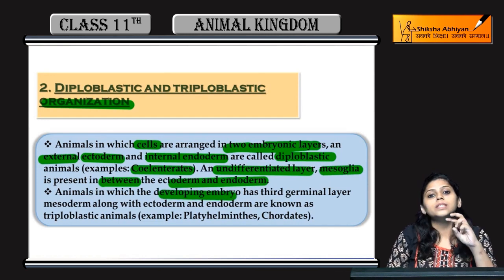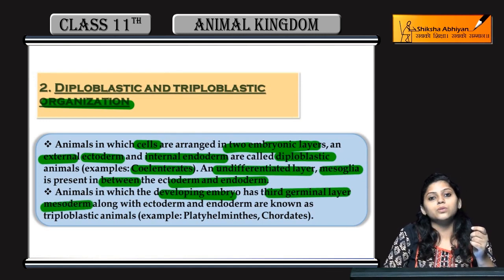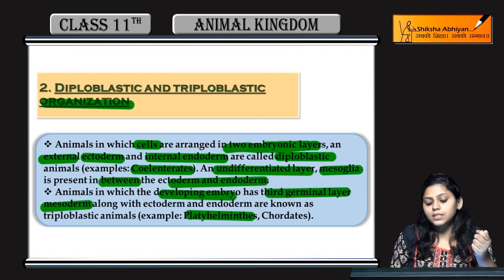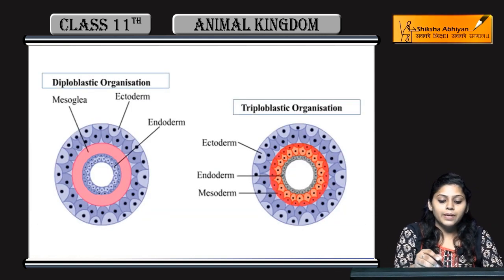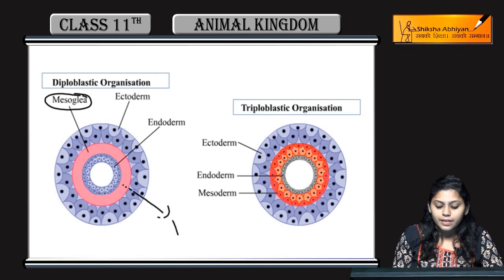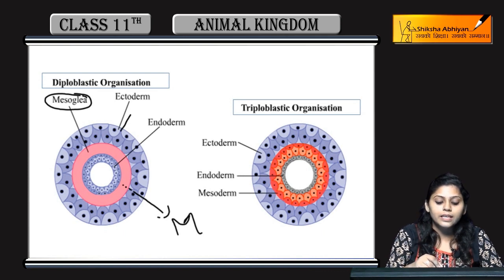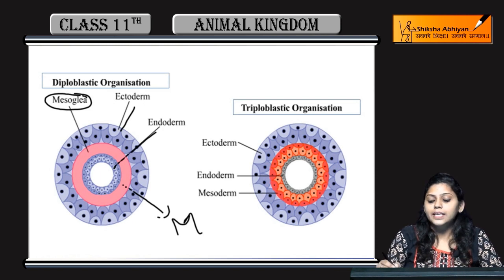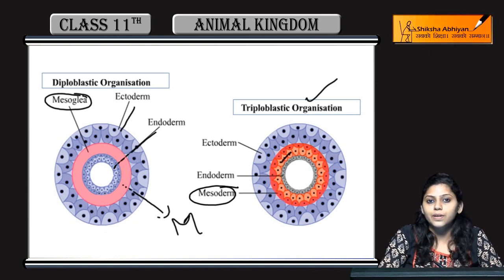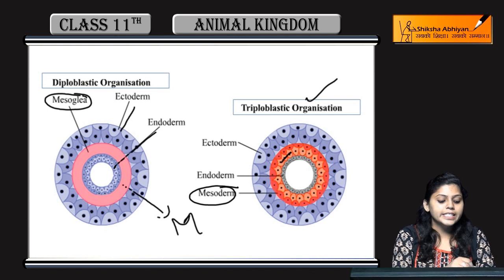Animals jinme developing embryo mein three germinal layers hoti hain — ectoderm aur endoderm to hoti hi hai, saath mein mesoderm bhi present hoti hai — unhe triploblastic organization ya organisms bolte hain. Inme platyhelminths aur chordates aate hain. Diploblastic organism mein mesoglea layer hai — yeh jo pink color ki layer hai yeh mesoglea hai, isme differentiated cells nahi hain. Outer layer is ectoderm, inner layer is endoderm. In case of triploblastic organisms, mesoderm mein differentiated cells present hain — yahi difference hai diploblastic aur triploblastic organization ka.